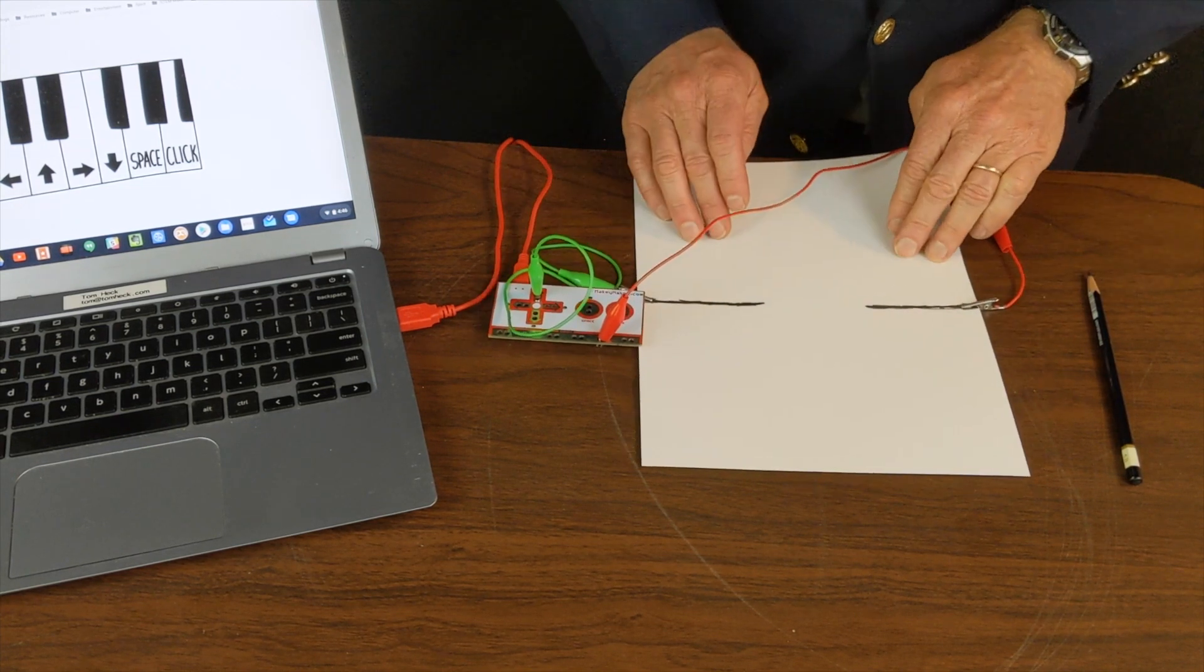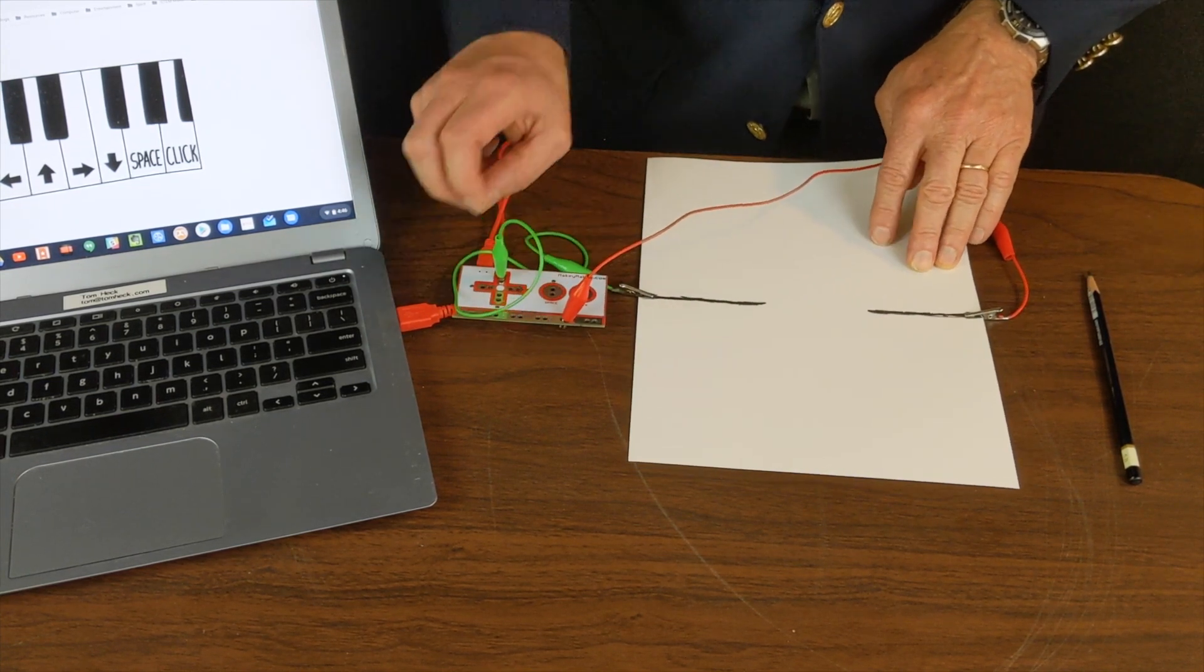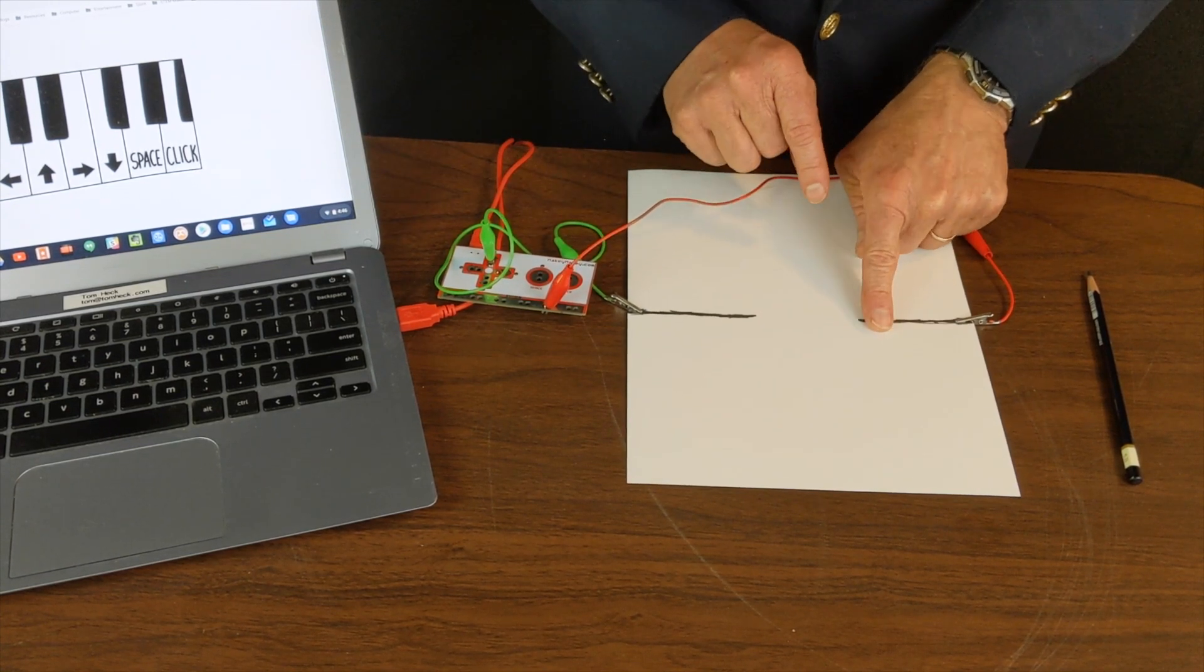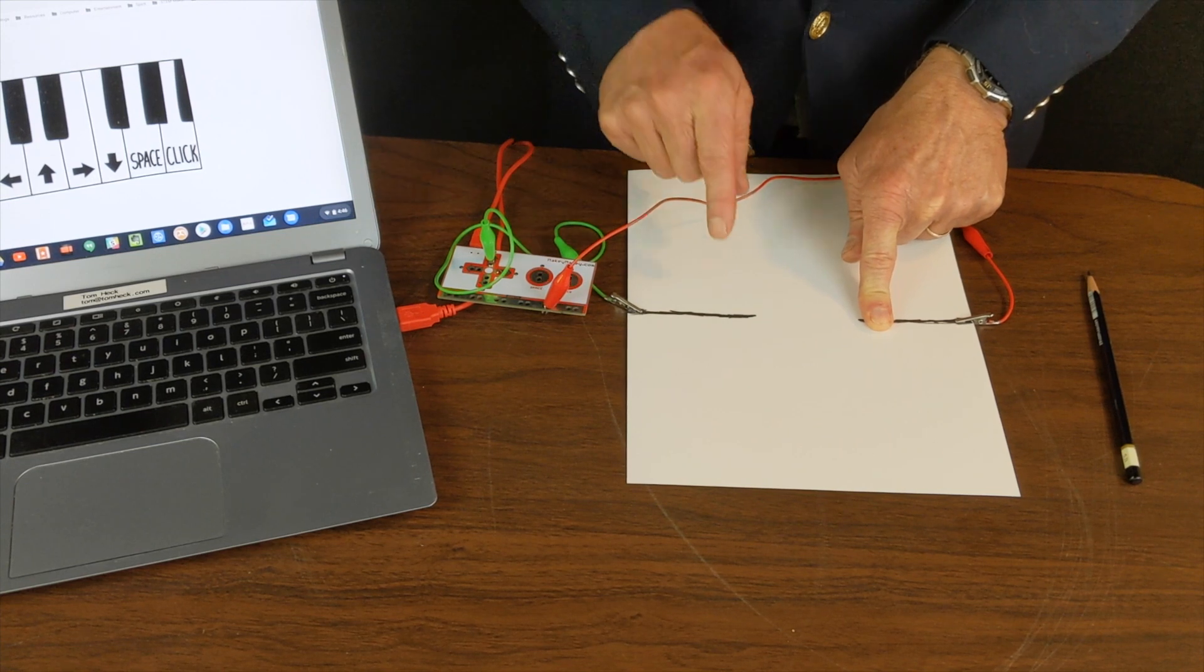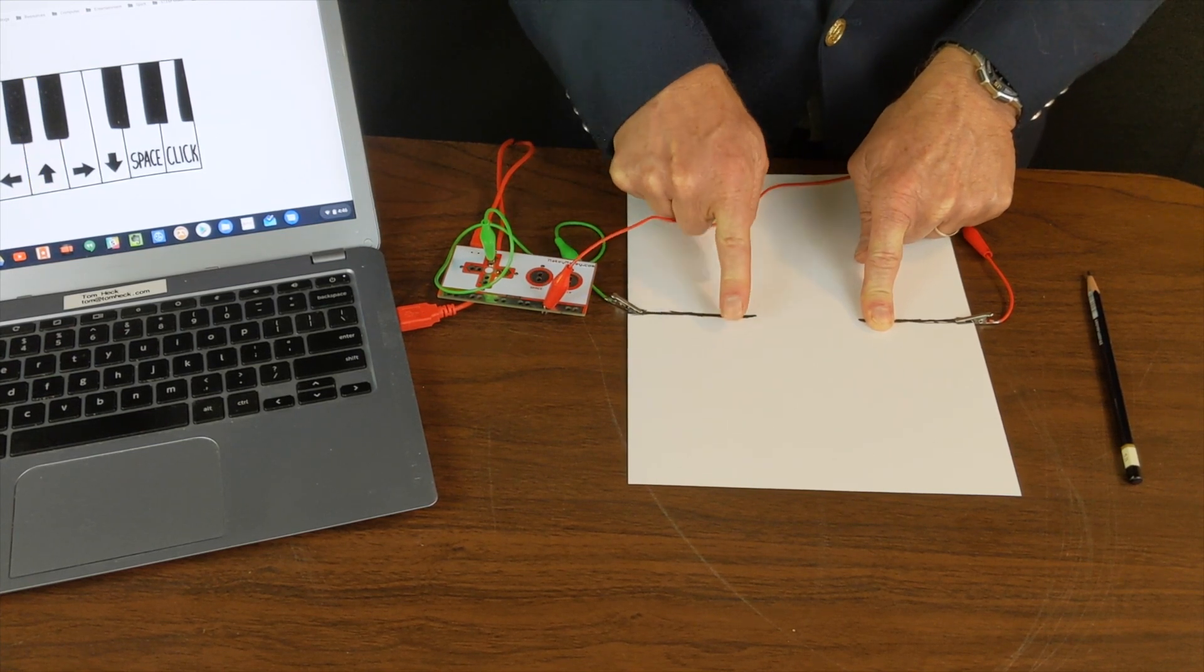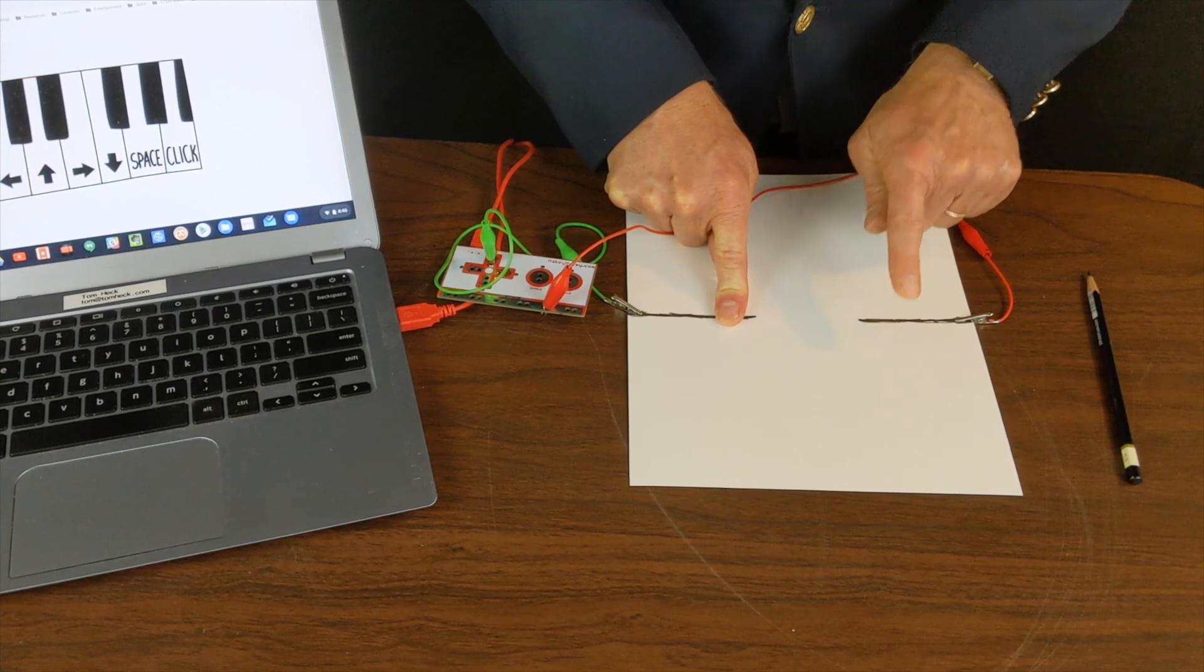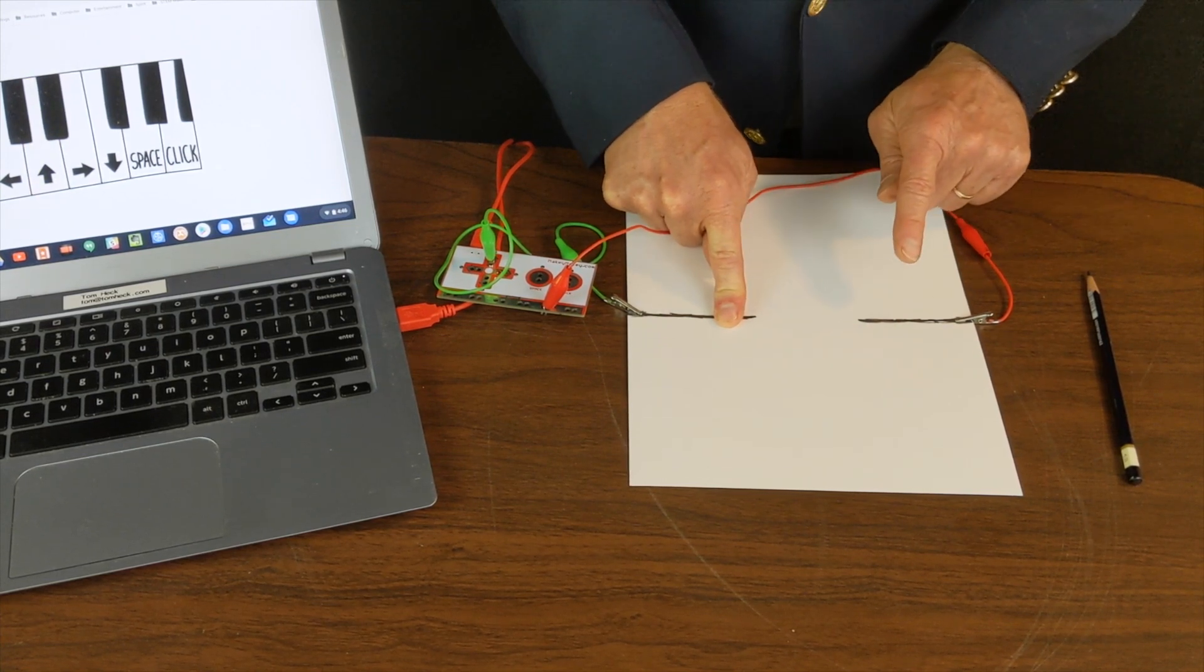I'm attaching the alligator clips to the pencil lead. Now, I should be able to touch the pencil lead and operate the piano. And it doesn't matter which side I touch as long as I am completing the circuit.